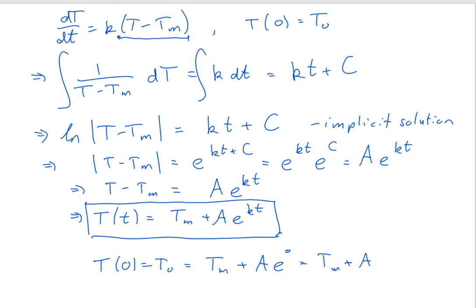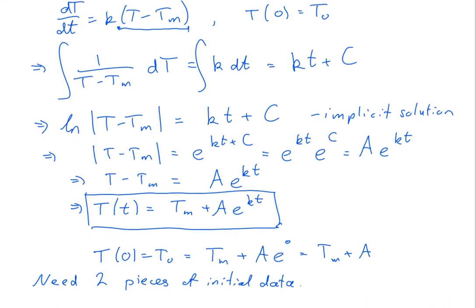But I also need to know k. Knowing the initial value tells me the constant A, but I also need to find k, which means I'm going to need one more piece of information. So altogether I need two pieces of initial data. Typically, this is done by measuring the temperature of the object at two different times — possibly at time zero and one minute later. From that temperature difference, you'll be able to plug in and find k, and then find the temperature as a function of t.